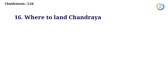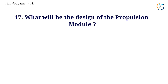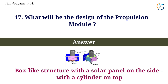Where will Chandrayaan-3 land? Answer: At the south pole of the moon. What will be the design of the propulsion module? Answer: Box-like structure with a solar panel on the side and a cylinder on top.